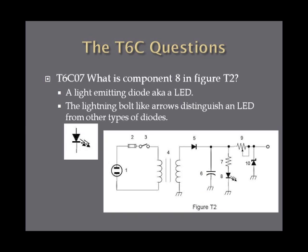What is component eight in figure T2? Component eight looks like an arrow pointing towards a line with a bunch of lightning bolts coming out of it. That arrow pointing towards the base is the schematic symbol for a diode. The little arrows coming out of it mean it's emitting something — it's emitting light. So the diode symbol with the lightning bolt arrows coming out of it is a light-emitting diode, or LED.